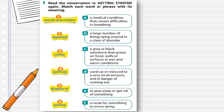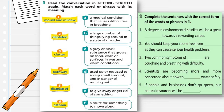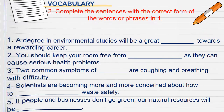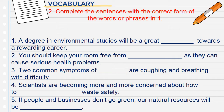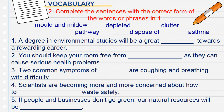Những hoạt động nãy giờ chính là bài tập số 1 trong sách giáo khoa trang 32. Bây giờ chúng ta chuyển sang bài tập số 2: complete the sentences with the correct form of the words or phrases. Number 1: 'A degree in environmental studies will be a great ___ towards a rewarding career.' After the adjective 'great' we need a noun, so we fill in pathway.